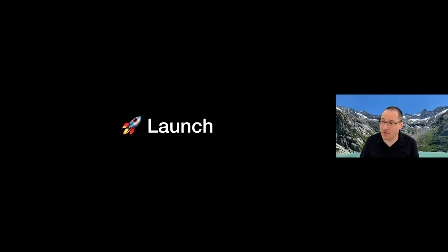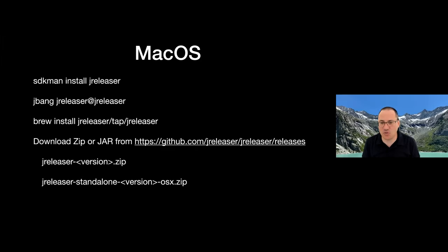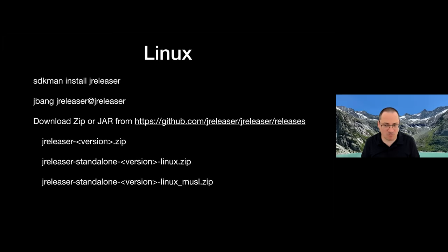How do you launch the tool? On OS X or Mac, you can install it from SDKMan, use JBang to launch the latest version, install from Homebrew, or go to the release page and download a zip file. There are two versions: one that expects you to have a Java 8 runtime, and a standalone version which is a cross-platform JLink Java runtime created with JReleaser itself — so you don't need any Java in your environment. For Linux, almost the same instructions, with an additional standalone version for Linux Musl platform, useful when running on Alpine Linux.